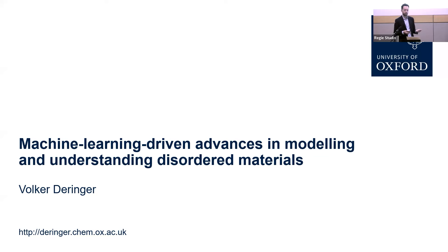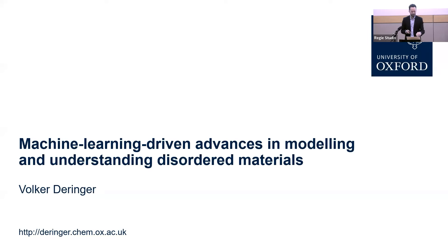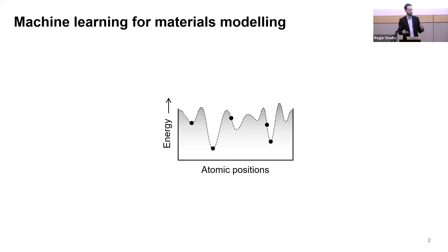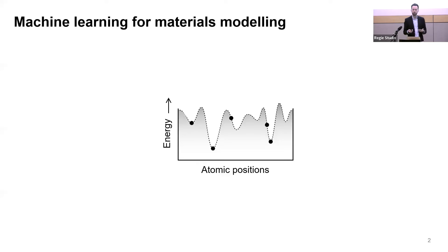I also want to talk about the computational tools that we develop that help us do that. It will be a slightly unconventional order — I'll start with some materials and then go to the machine learning methods at the end. When we talk about atomistic materials modeling, the central problem we want to solve is to figure out the so-called potential energy surface of a material.